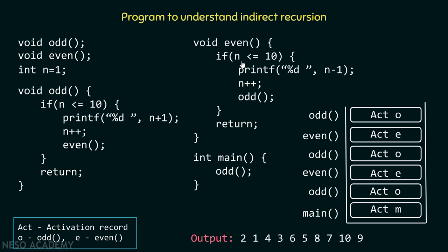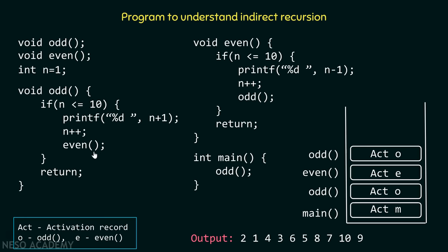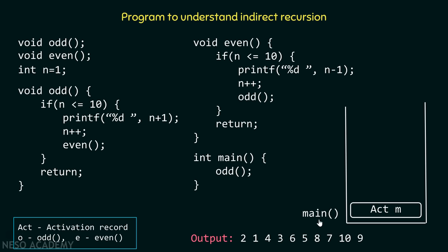This process continues until we obtain n equals 11. When n equals 11, the condition fails and we start returning. Return means we return to the position where we left off. The activation record of odd pops off the stack and we return to even. After that there is nothing, so we encounter return again, returning to odd. Similarly the procedure continues, simply returning back up the stack. Finally we return to the main function, and as there is nothing after that, main pops off the stack and execution is completed.